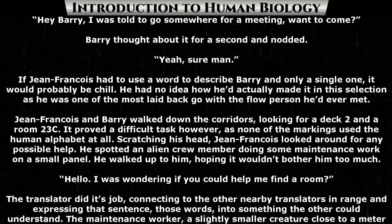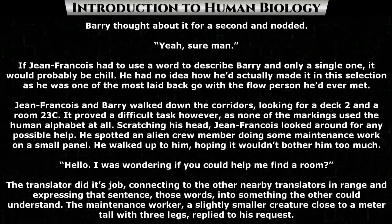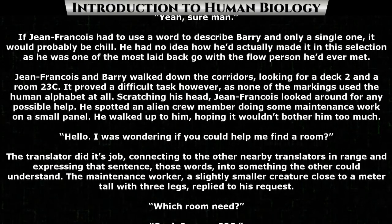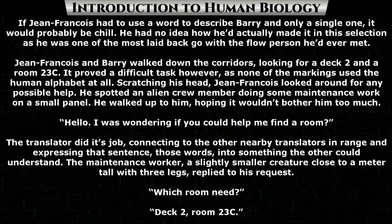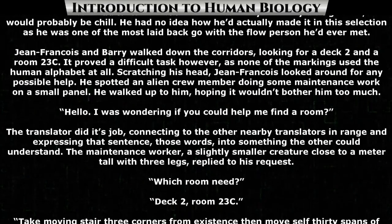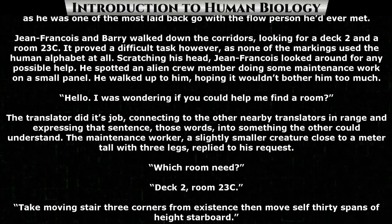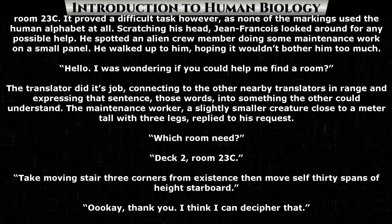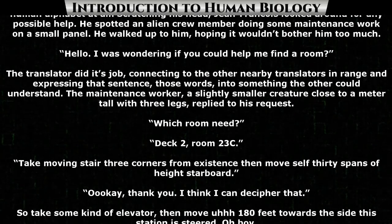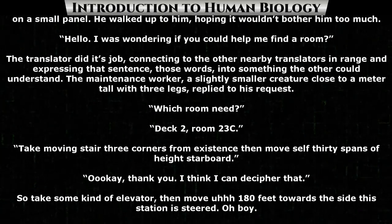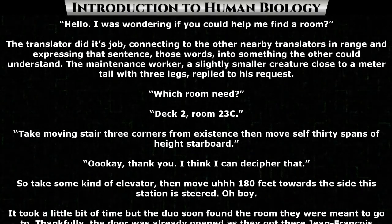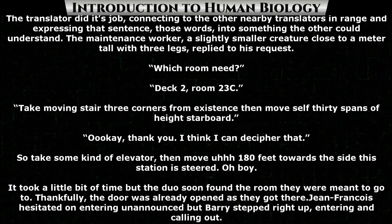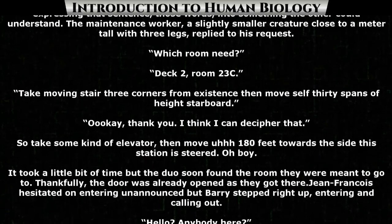Jean-Francois and Barry walked down the corridors, looking for deck 2 and room 23C. It proved a difficult task, however, as none of the markings used the human alphabet at all. Scratching his head, Jean-Francois looked around for any possible help. He spotted an alien crew member doing some maintenance work on a small panel and walked up to him. "Hello, I was wondering if you could help me find a room." The translator did its job, connecting to the other nearby translators in range and expressing the sentence into something the other could understand. The maintenance worker — a slightly smaller creature, close to a meter tall with three legs — replied: "Which room you need? Deck 2, room 23C. Take moving stair three corners from here, then move south 30 spans to height starboard." "Okay, thank you. I think I can decipher that."